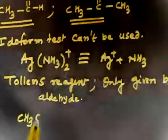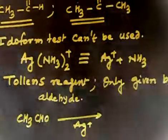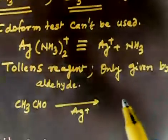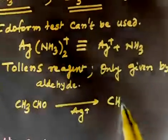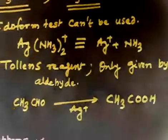If you have aldehyde, that is CH3CHO, and if you treat with Ag plus, this gets oxidized. So you will have CH3COOH. But if you have a ketone...